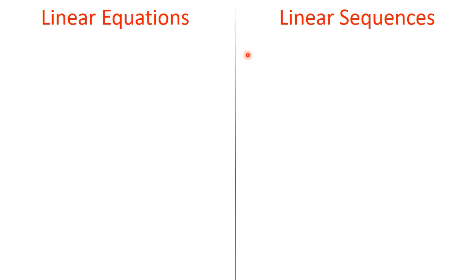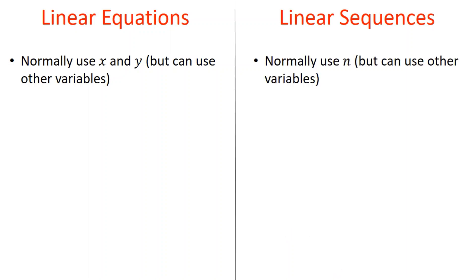So just to make some of the differences clear. With linear equations, we are normally using x and y. We can use other variables, we can use other values. That's absolutely fine. Nothing's stopping us using other letters. But we tend to use x and y to remind us that this is a graph, to remind us that we've got an x axis and a y axis. With linear sequences, we often use n instead. Again, could use any other letter, could use x, could use y, could use a, but we tend to use n.